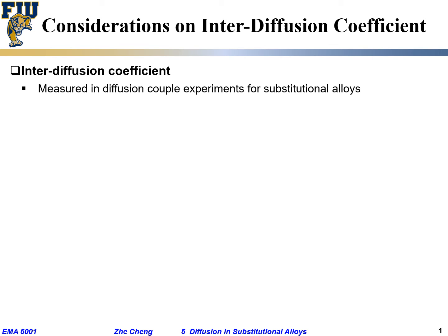So we talked about the interdiffusion, we talked about the Darken equation. Now let's have some examples to illustrate some of these features. The first one is: we get the so-called interdiffusion coefficient by doing these types of diffusion couples.